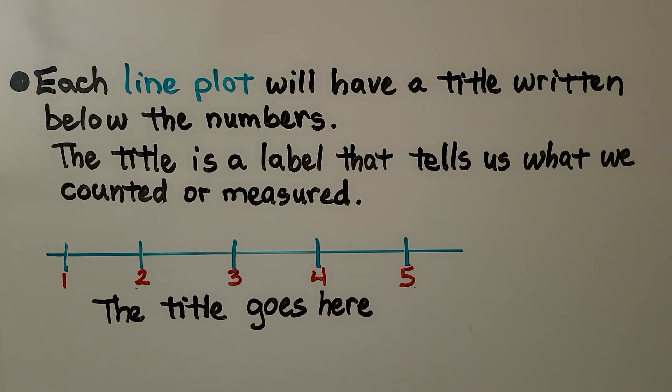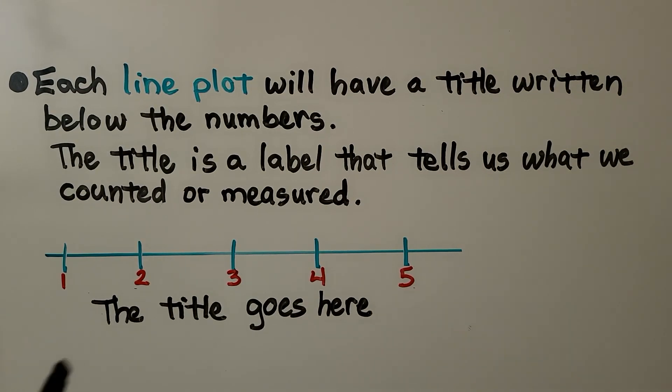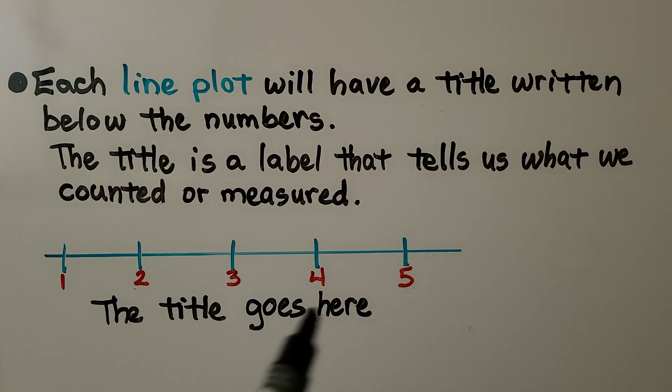Each line plot will have a title written below the numbers. The title goes here, below these numbers. And the title is a label that tells us what we counted or measured. It describes what we counted or measured.